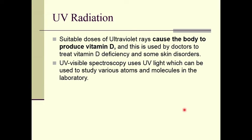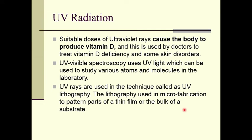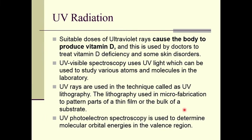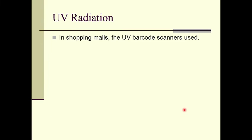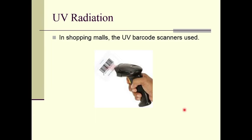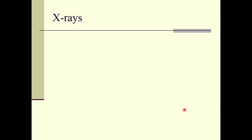UV-Vis spectroscopy uses UV light to study various atoms and molecules in the laboratory. UV rays are used in a technique called UV lithography, used in micro-fabrication to pattern parts of a thin film or the bulk of a substrate. UV photoelectron spectroscopy is used to determine molecular orbital energies in the valence region. UV barcode scanners are also used in shopping malls to scan price and product information.